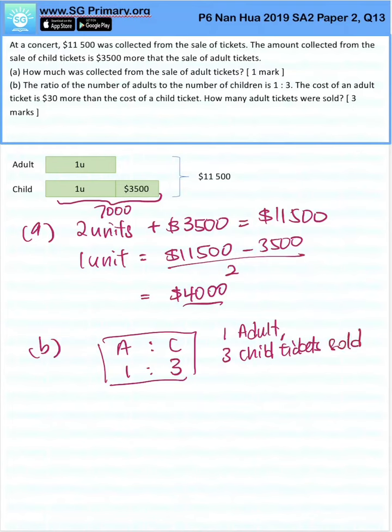So let's take $4,000, the adults, times 3, which is $12,000. Adult sales minus the children's sales. $12,000 minus $7,500, sorry, this should have been $7,500, will give us $4,500.